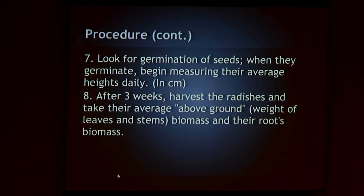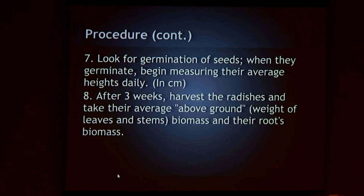Then I looked for germination. When I saw that the seeds had germinated and began to grow, I took average daily heights in centimeters. After three weeks, I harvested the radishes and took the average above-ground biomass, meaning the stem and leaves of the plants. Then I took the below-ground root growth, or root biomass, which is basically the weight of the radishes, since radishes represent root growth.